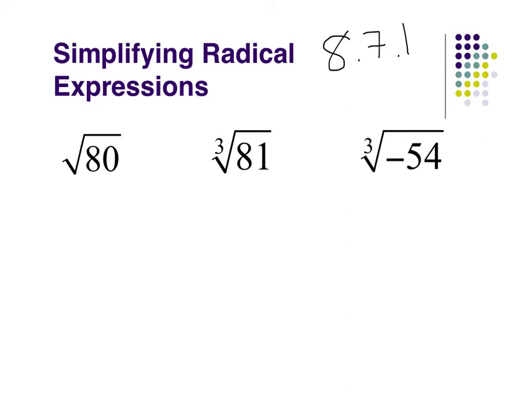Here we have a square root. If we want to simplify that, we're going to look for perfect squares to take out. Well, 80 is divisible by 16, and you get 5. The square root of 16 is 4, so I get 4 root 5. That should be really easy to remember that one, hopefully.